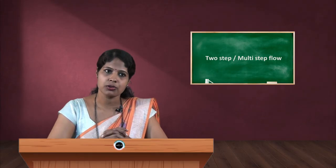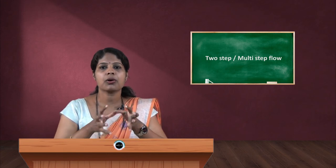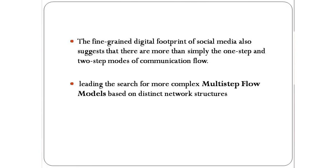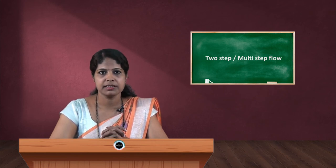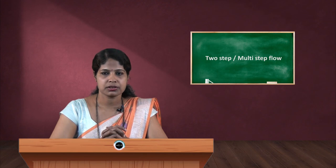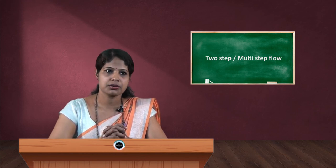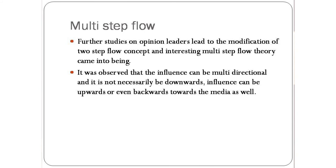But again, there is one more school of thought which put forward a complex information flow known as multi-step flow model, which says there is multi-directional flow of information in today's mass media. Now let us see what this multi-step flow of information is. Further studies on opinion leaders and two-step model theory led to modification of the two-step flow model, putting forward the multi-step flow theory. It was observed that influence can be multi-directional and is not necessarily downward or vertical.